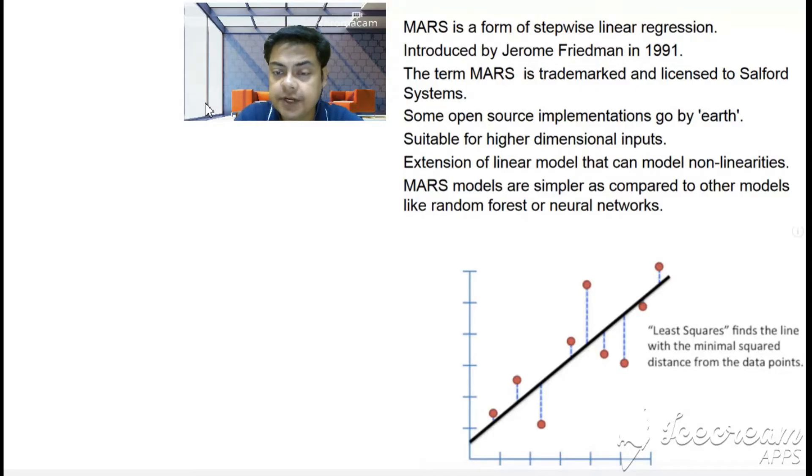It's an extension of linear models that can model non-linearities. MARS models are simpler compared to random forest or neural networks—a very simple but very effective model.